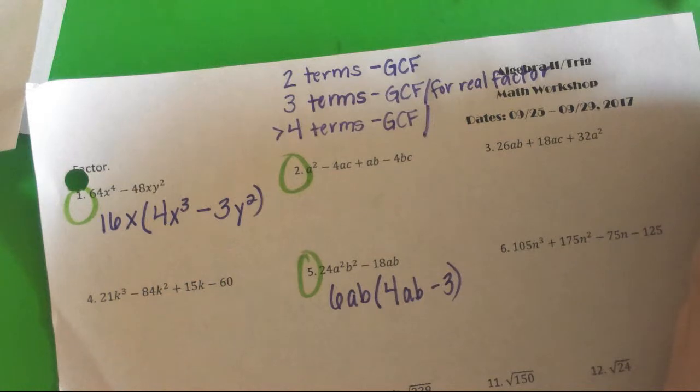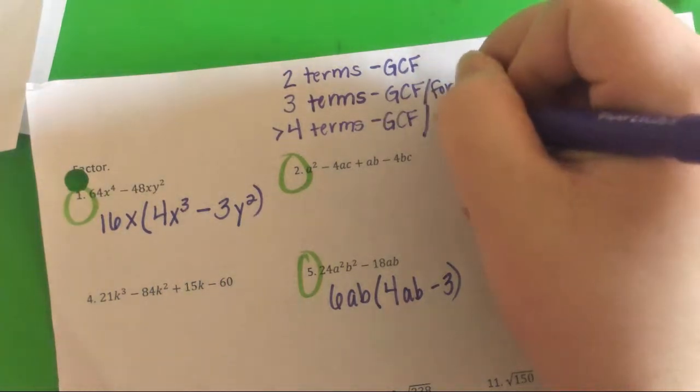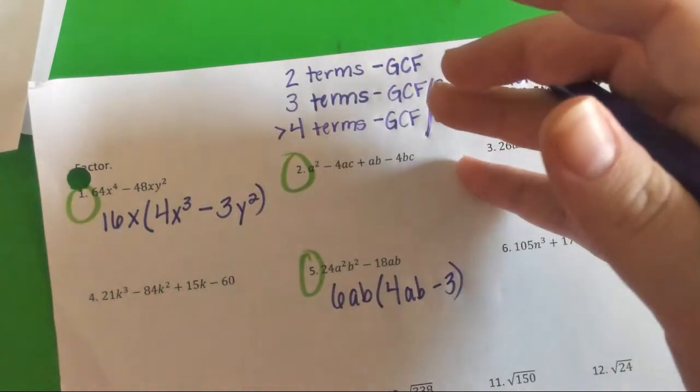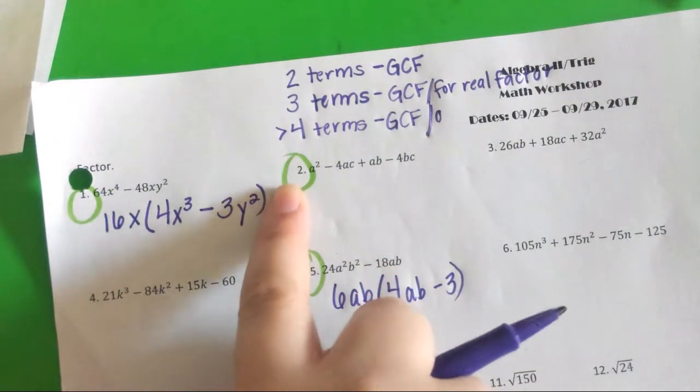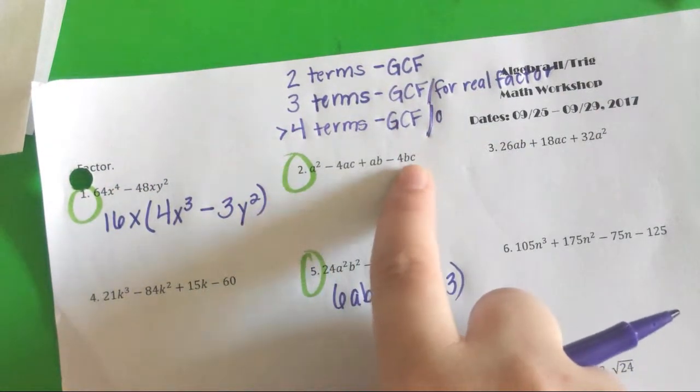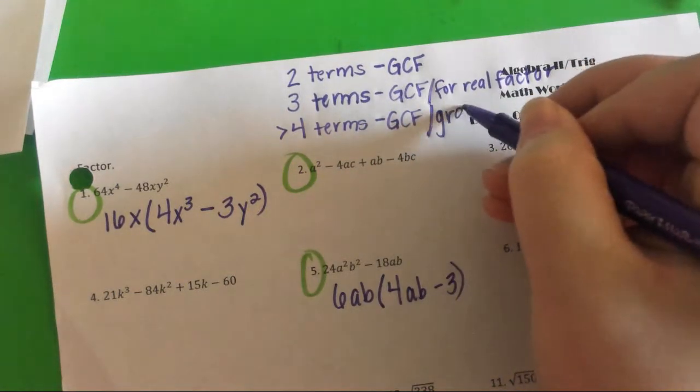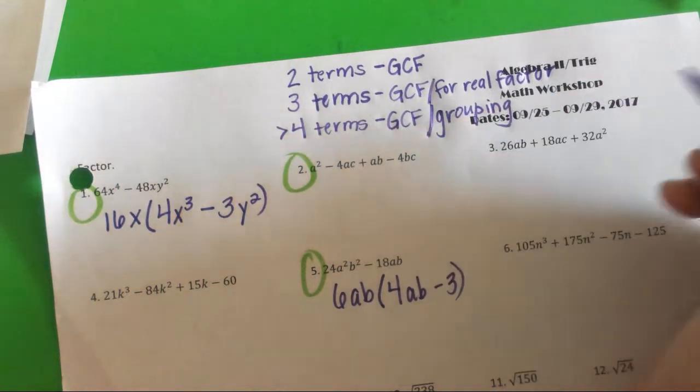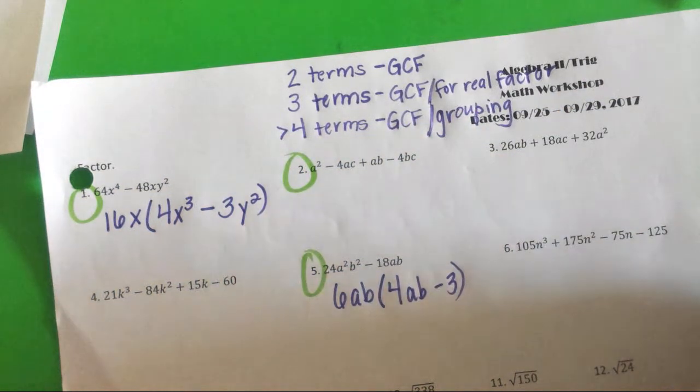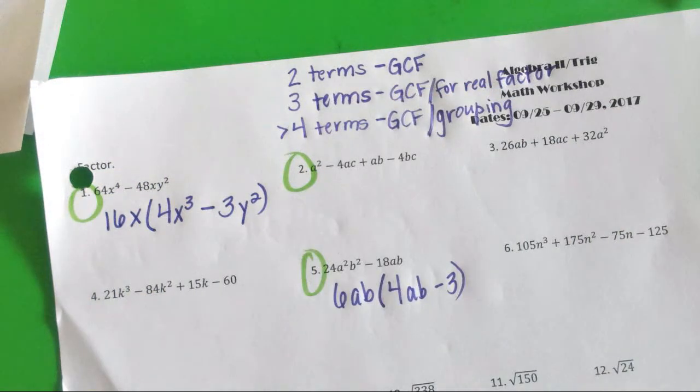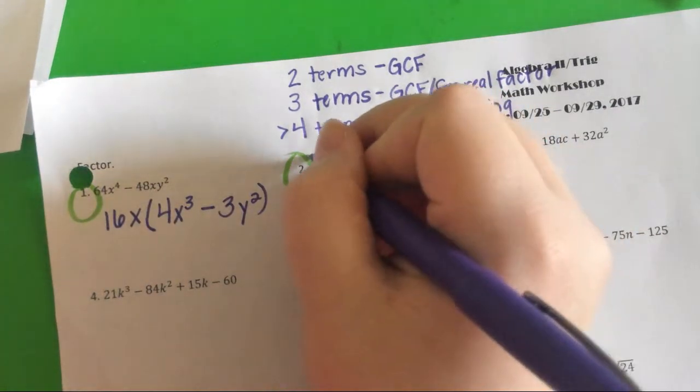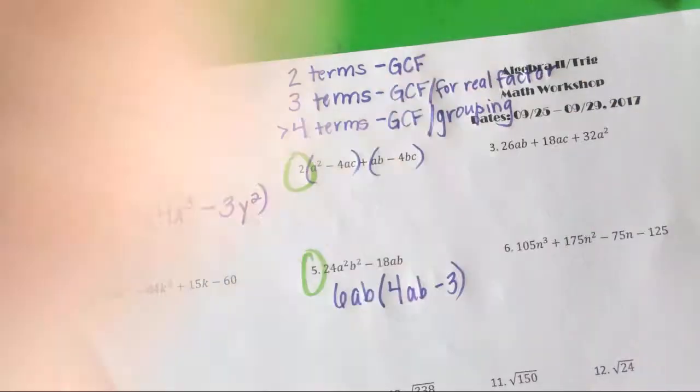If there are more than three terms, so four or more, we have to use a technique called, after GCF - is there a GCF that comes out of everybody? For instance, on number two, I was thinking maybe an A, but that last term, no A. So there is no GCF. After you think GCF, we use a technique called grouping. With grouping, we put each pair in parentheses. So we break it up, like you're a set and you're a set.